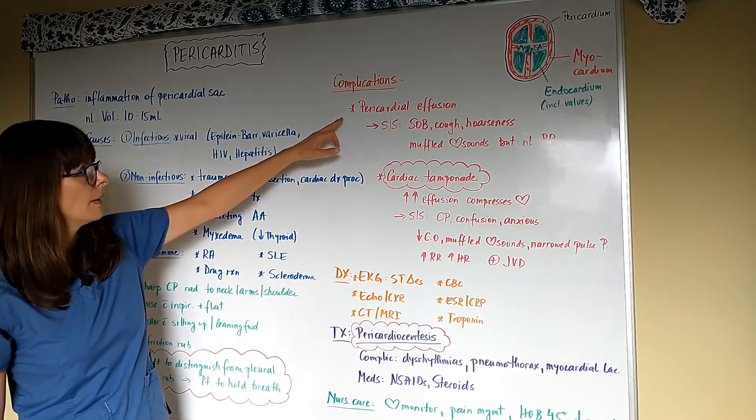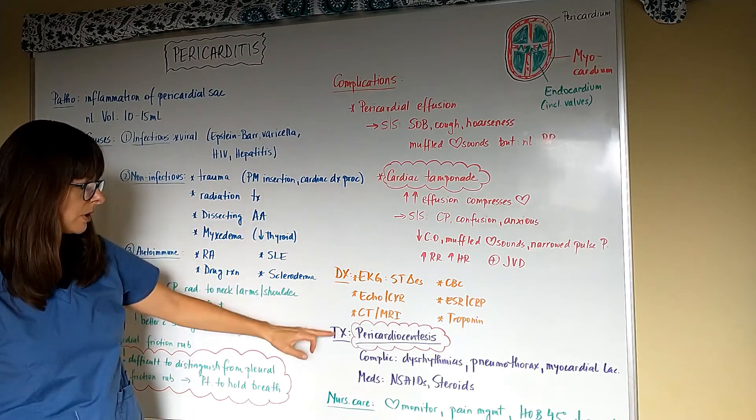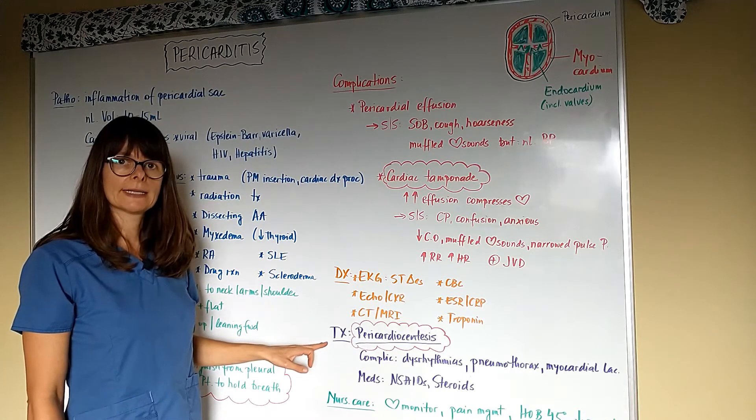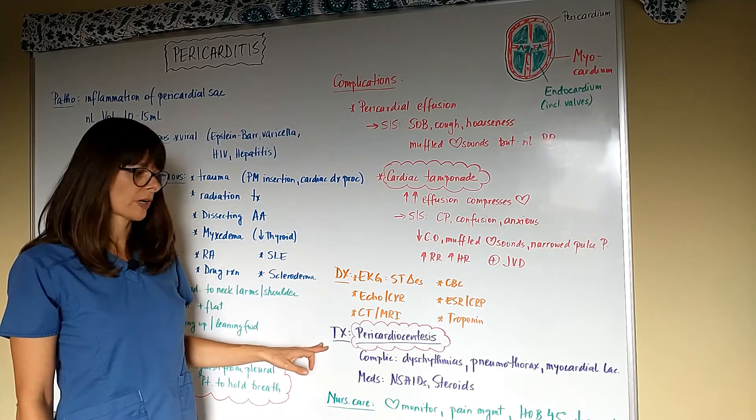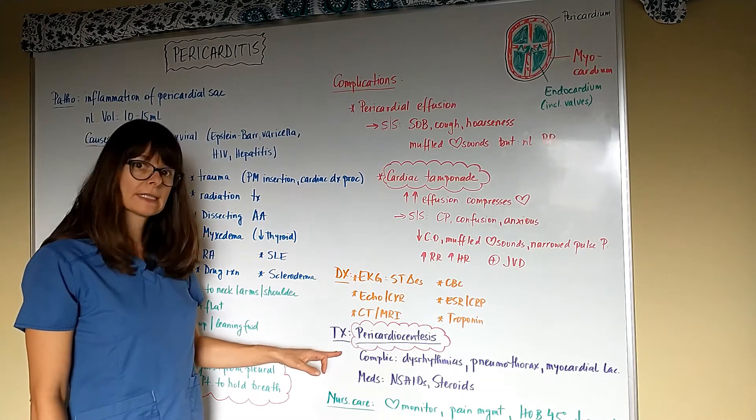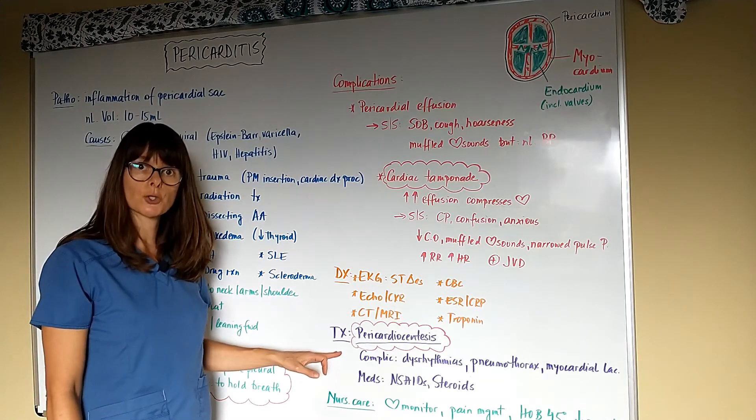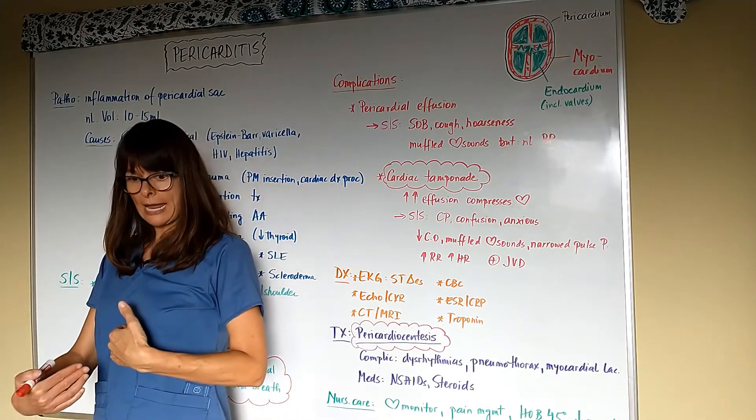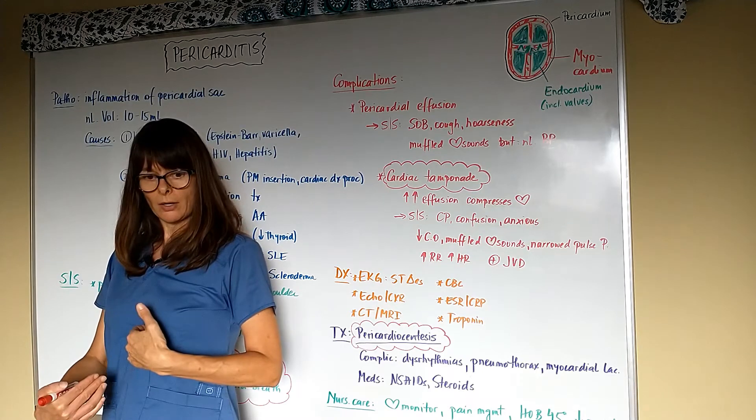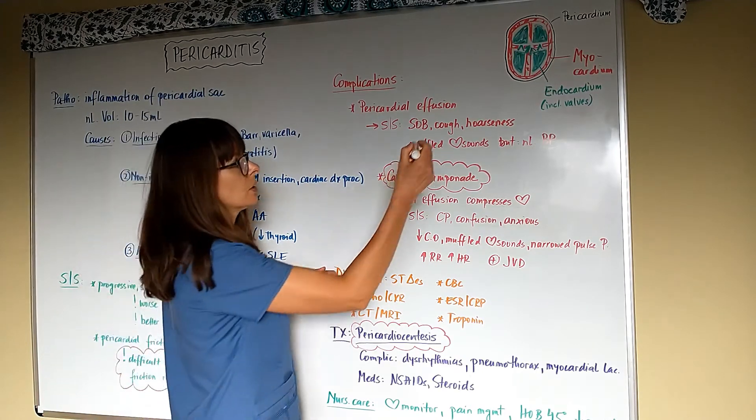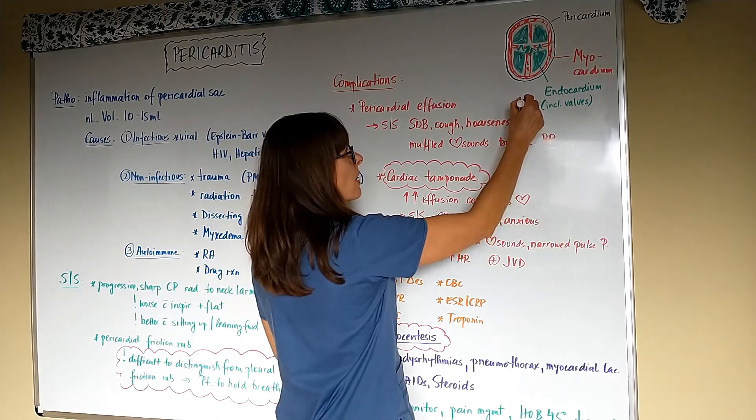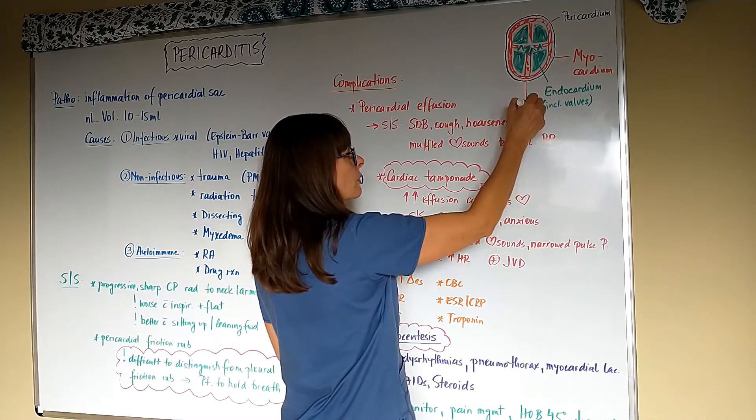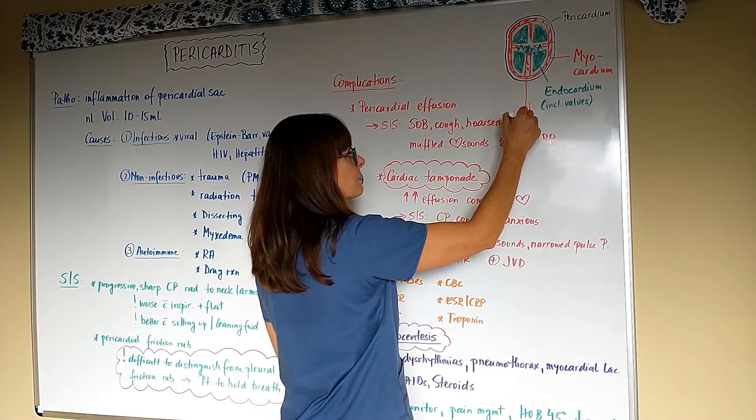The treatment for the effusion and the tamponade is pericardiocentesis—so removal of that excessive fluid that has now accumulated in the pericardial sac. And the way that this is done is the provider will insert a needle right below the sternum at about a 45-degree angle where they will, with ultrasound guidance, insert the needle to come from the bottom right up into the pericardial sac here. And with a syringe, they will aspirate that fluid into their syringe and then send it off to the lab.